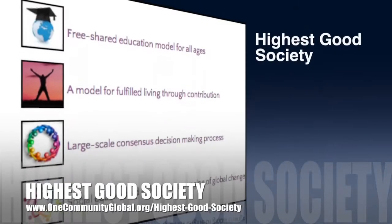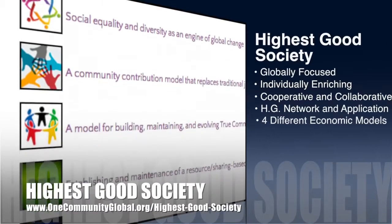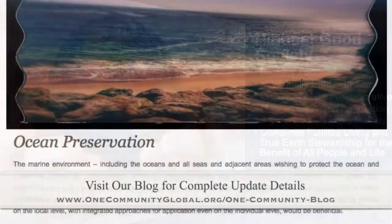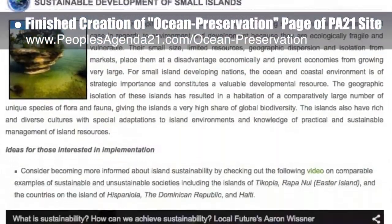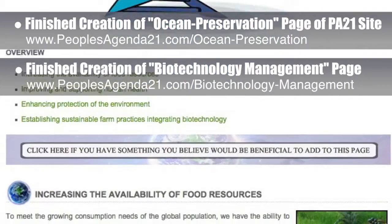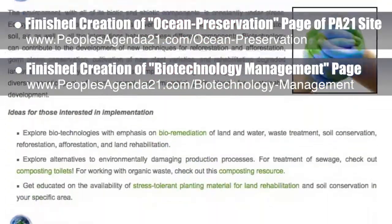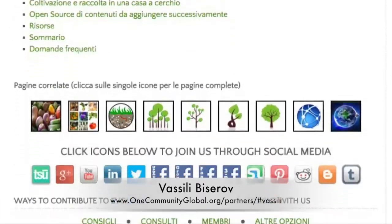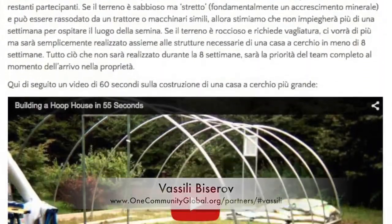OneCommunity's approach to Highest Good Society is globally focused, individually enriching, cooperative and collaborative, includes a Highest Good network and application, four different economic models, and combines fulfilled living and true Earth stewardship for the benefit of all people and all life on this planet. This week, the core team finished creation of the Ocean Preservation page of the People's Agenda 21 site, covering resources for anyone interested in proactive action for protecting and preserving our oceans. We also finished creation of the Biotechnology Management page, covering resources for proactive action with biotechnology in relation to food, supporting human health, and protecting the environment. Vasily Bizarov, writer, poet, and translator, finished the first translation of one of our pages — the open source Hoop House Construction page — into another language.